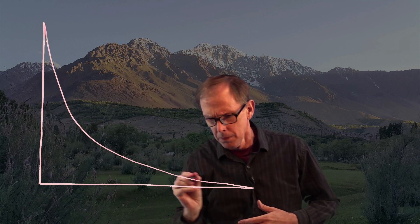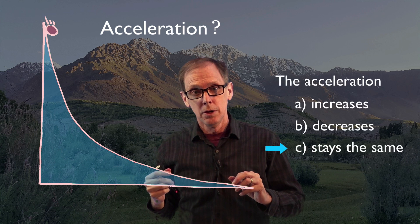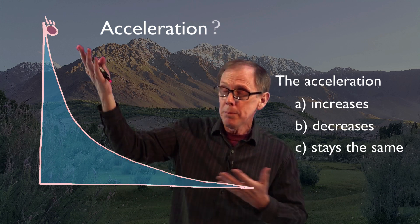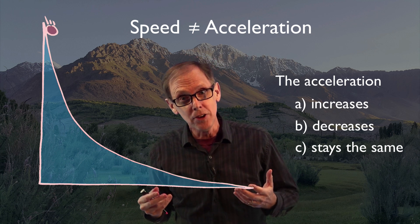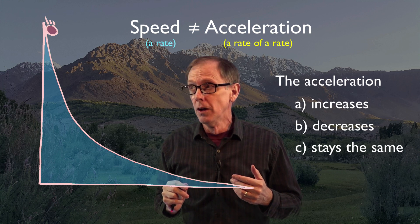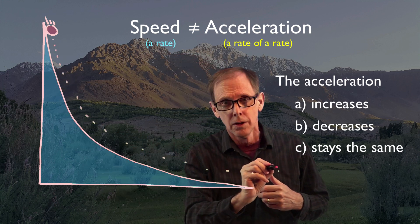You and a friend are watching a ball roll down a hill like this. It's pretty clear what's going to happen to the speed of the ball, but what happens to its acceleration? Increases, decreases, or stays the same? Could you explain to your friend how it is that what happens to the speed is not necessarily what happens to the acceleration? That speed and acceleration are two different concepts? Stay curious.